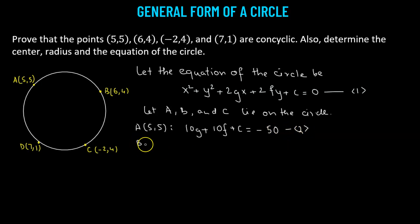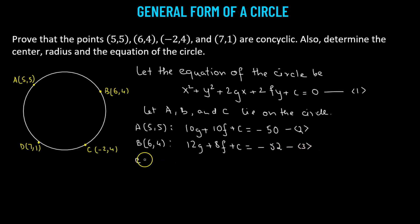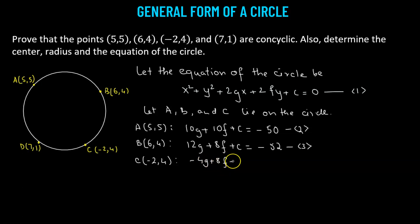Next, for point B at coordinate (6, 4), substituting into the circle equation gives us 12g plus 8f plus c equals negative 52. We label this equation number 3. Then for point C at coordinate (-2, 4), we get negative 4g plus 8f plus c equals negative 20. We label this equation number 4.